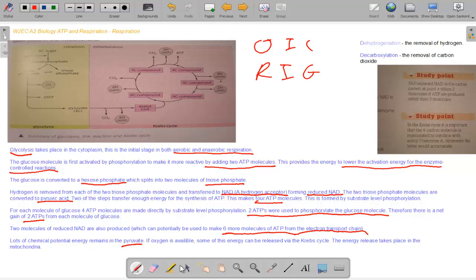So lots of chemical potential energy remains in the pyruvate molecule. If oxygen is available, some of this energy can be released via the Krebs cycle. The energy release takes place in the mitochondria. So first we're going through definitions. Dehydrogenation: removal of hydrogen. Decarboxylation: the removal of carbon dioxide.